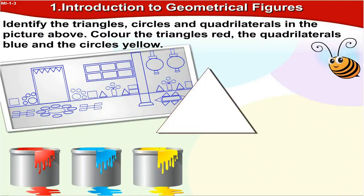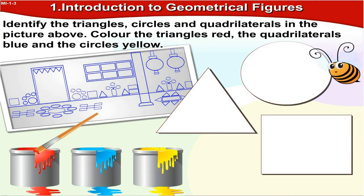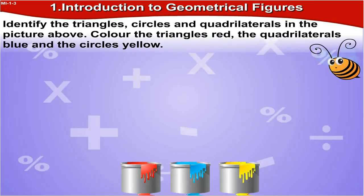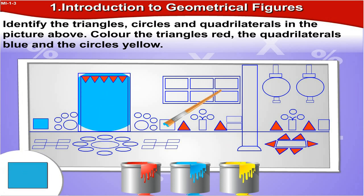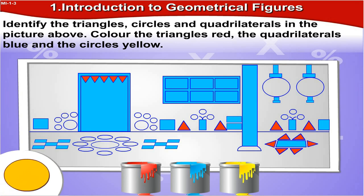Identify the triangles, circles and quadrilaterals in the picture above. Colour the triangles red, the quadrilaterals blue, and the circles yellow. I'm sure this activity is going to be fun for you, so just go for it.